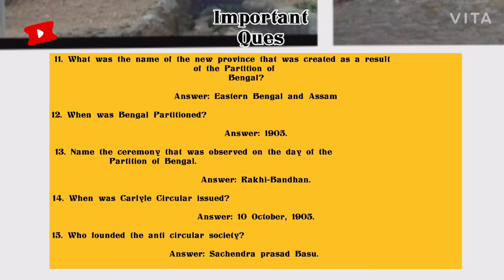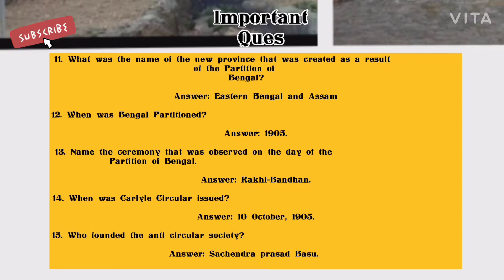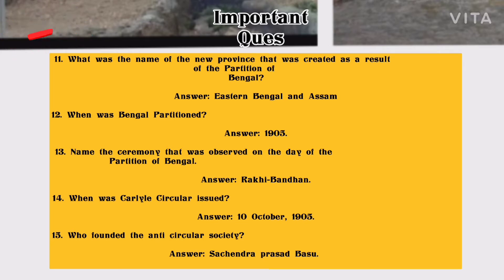Number 11: What was the name of the new province created as a result of the Partition of Bengal? Answer: Eastern Bengal and Assam. Number 12: When was Bengal partitioned? Answer: 1903. Number 13: Name the ceremony observed on the day of the Partition of Bengal. Answer: Rakhi Bandhan. Number 14: When was the Carlyle Circular issued? Answer: 10 October 1903.